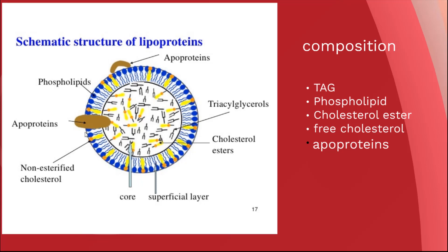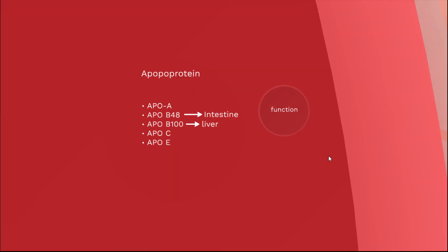We know that lipids are insoluble in water, so they cannot be transported in the blood alone. Lipoproteins are here to transport lipids from one place to another among various tissues and organs. So from this structure, we can identify that the lipid portion of lipoprotein includes triacylglycerol, phospholipid, cholesterol ester, and free cholesterol, while the protein portion is apoprotein.